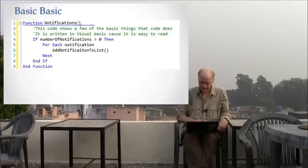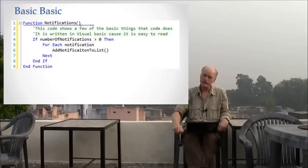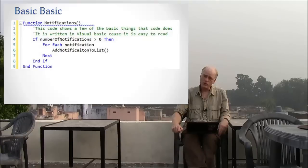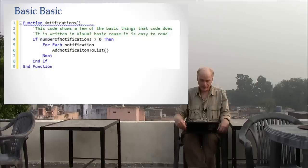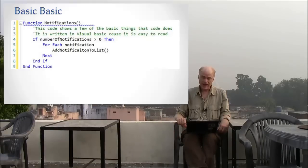Putting it all together: we have a function called notifications. If there are no notifications, it does nothing. However, if there are notifications, then for each notification, it adds it to the list. Line 6 — 'add notification to list' — is the reason for this function, and all the rest of the code is there to decide when to run it.